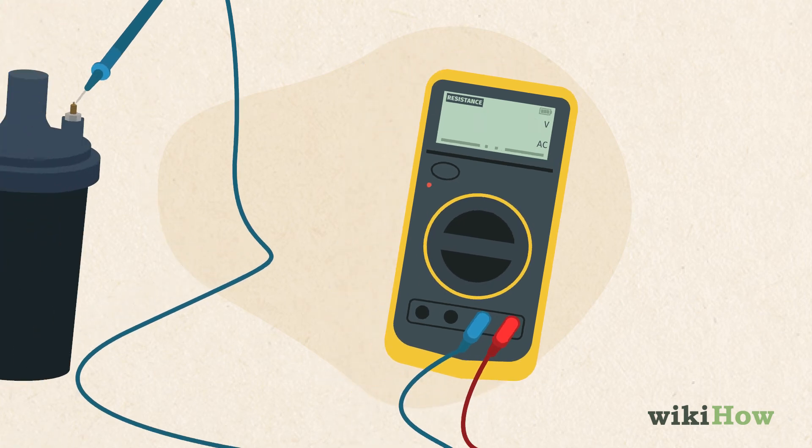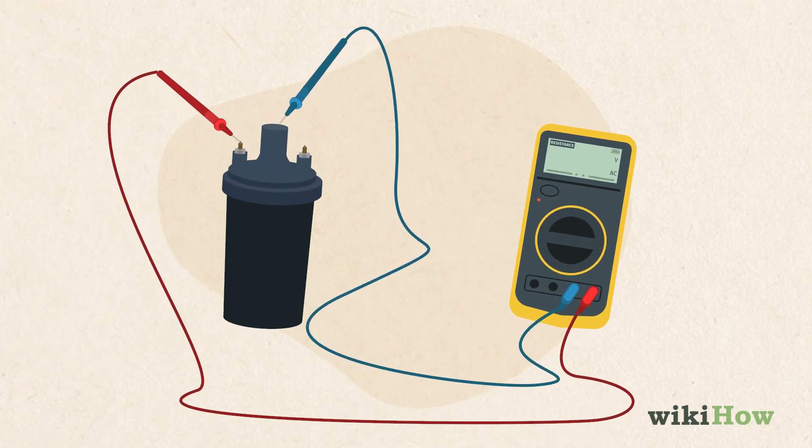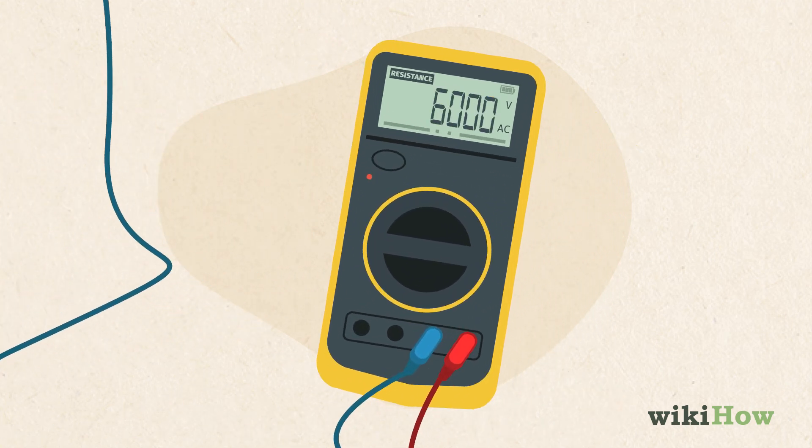Next, check the secondary resistance by moving the negative probe to the metal piece that connects the coil to the spark plug. Generally, the secondary resistance should be between 6,000 and 8,000 ohms.